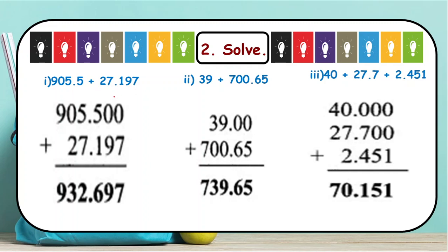Whenever you are solving such examples, the care you need to take is that the decimal should be placed one below the other. Now see, it will be 905.5, but in the second number after the decimal there are 3 digits and here just one digit is there. So to cover up the space, add 2 more zeros, making it 905.500 plus 27.197.